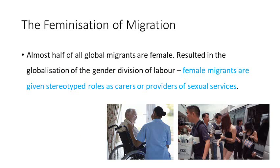Some sociologists have identified a feminisation of migration — almost half of all global migrants are now female, which is a new trend. Traditionally, migration was primarily a male activity. This has resulted in the globalisation of a gender division of labour. The jobs in demand tend to be jobs which are seen as feminised — for example, female migrants are often given stereotype roles such as carers or providers of sexual services.